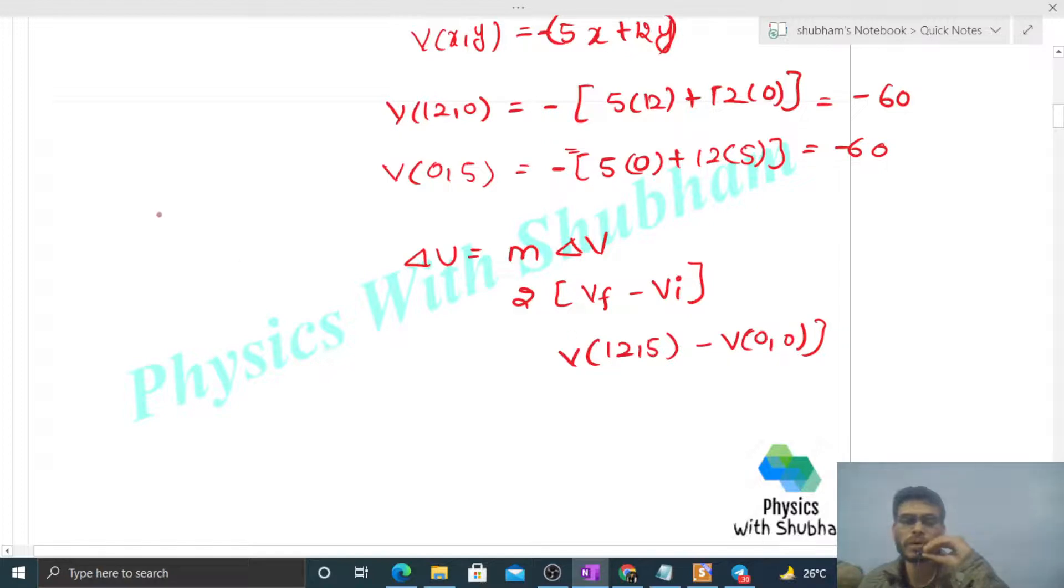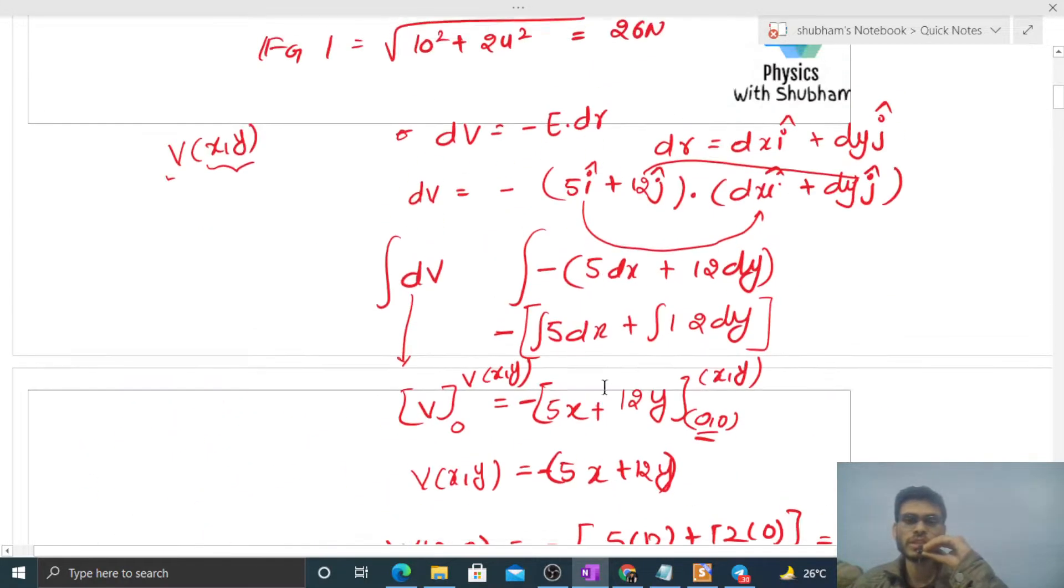Potential at (12,5) is -(5×12 + 12×5) = -120. At (0,0) it's zero. So change in potential energy is 2×(-120 - 0) = -240 Joules.